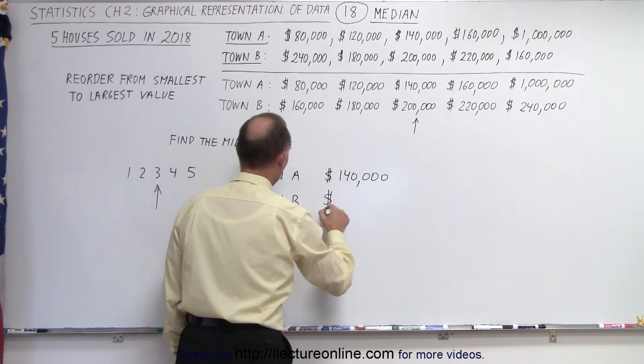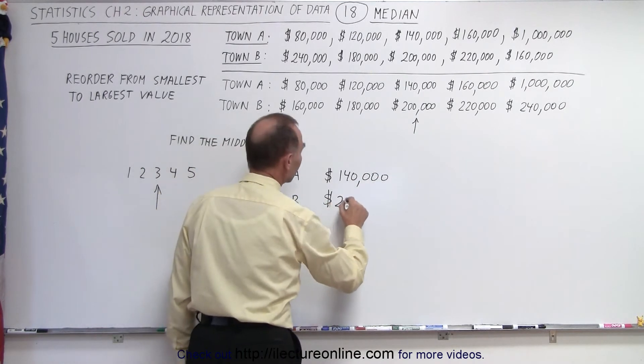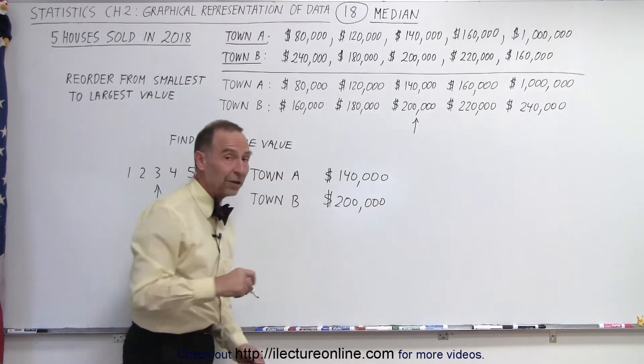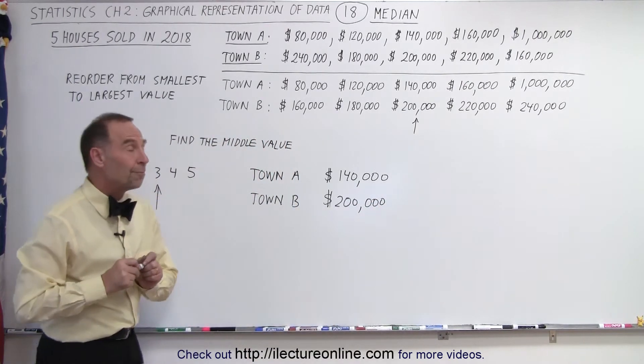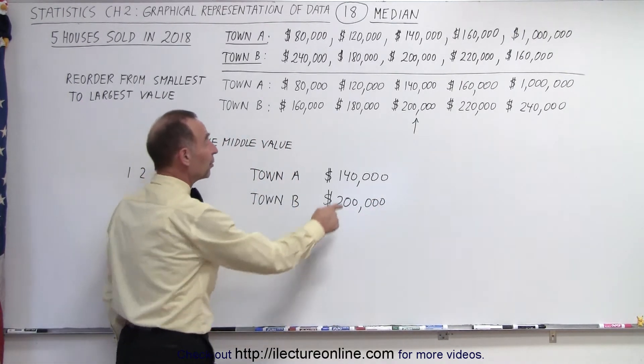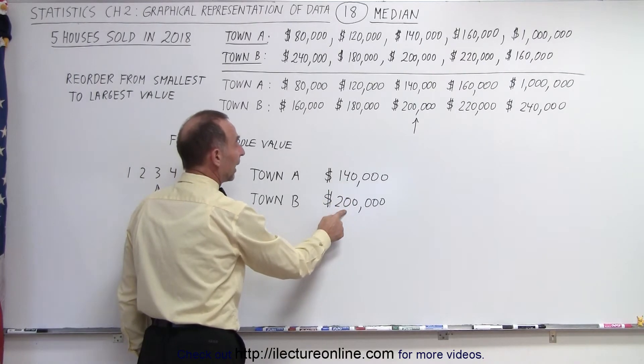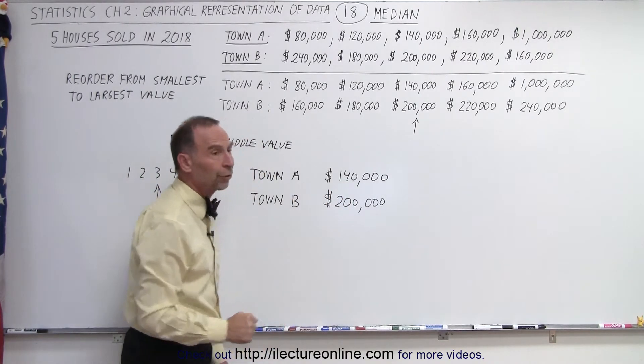And the median house price for town B is $200,000. Now remember on the last video the average or the mean was $300,000 for town A and $200,000 for town B.